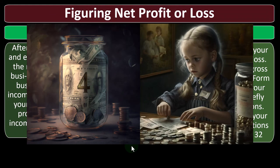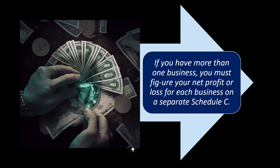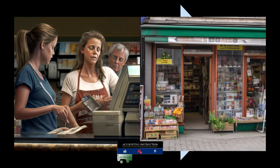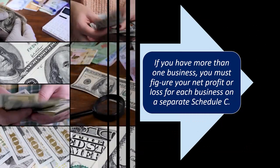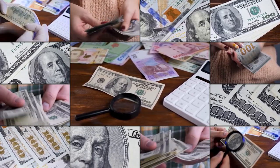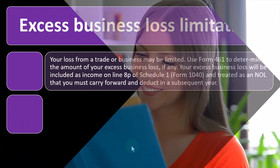Other situations that may limit your loss are explained in the instructions for Schedule C, Line G and Line 32. If you have more than one business, you must figure your net profit or loss for each business on a separate Schedule C. So if you have multiple types of businesses that are different in nature, you would have to file two Schedule Cs — each being a separate income statement format, both flowing into the self-employment tax calculation, Schedule 1, and the first page of Form 1040.